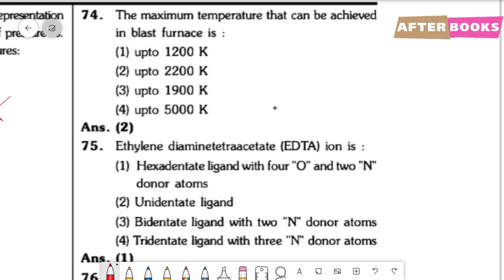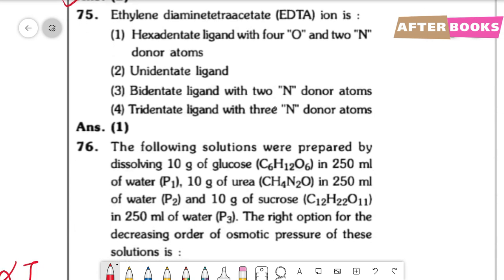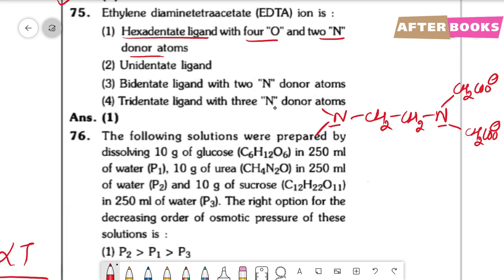Question number 74. Maximum temperature achievable in a blast furnace — the correct answer is option 2. Question number 75. EDTA is a hexadentate ligand. Its hexadenticity arises from 2 nitrogen atoms and 4 oxygen atoms. The structure of EDTA is: –CH2–CH2– connecting two N atoms, each bearing two –CH2COO⁻ units.